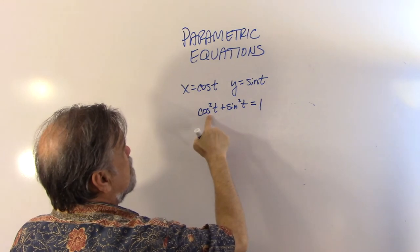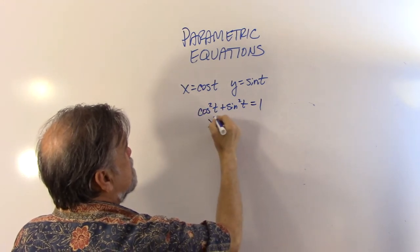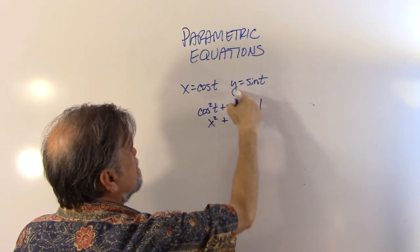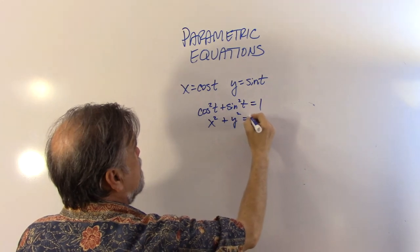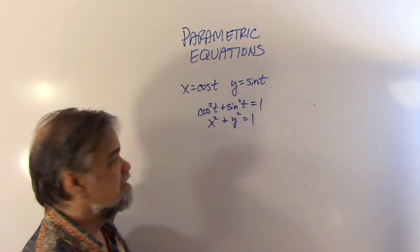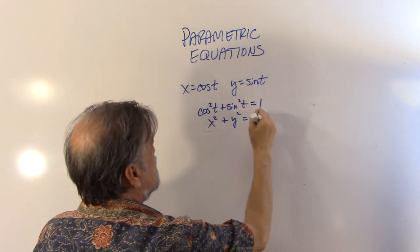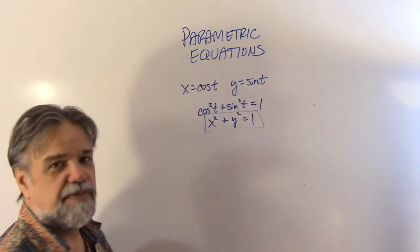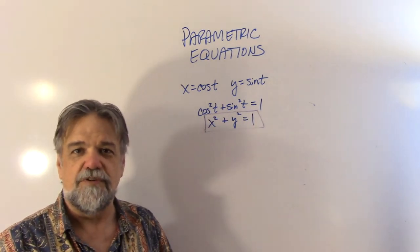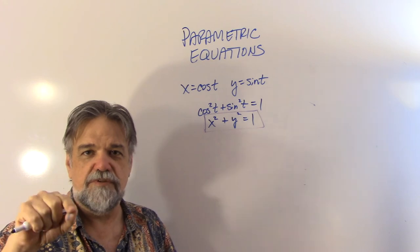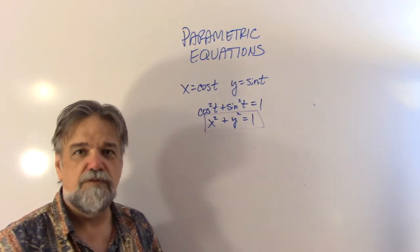Well, cosine squared is just going to be x squared, and sine squared is just going to be y squared. So there you go. There's our equation: x squared plus y squared equals 1. And I know what that is. That's a circle. That's a circle with the center at the origin with a radius of 1.